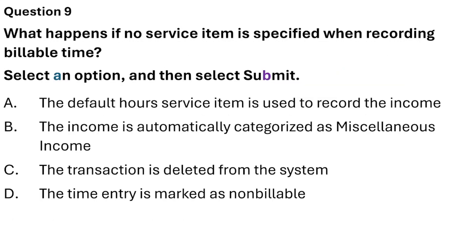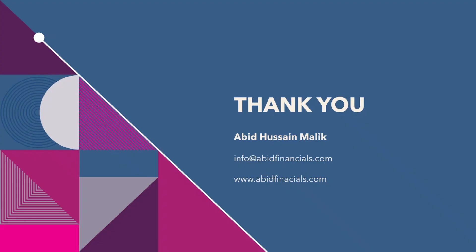Question 9: What happens if no service item is specified when recording billable time? Option A: The default service item is used to record the income. Option B: The income is automatically categorized as miscellaneous income. Option C: The transaction is deleted from the system. Option D: The time entry is marked as non-billable. The correct answer is Option A — the default service item is used to record the income.